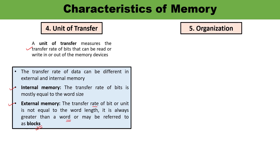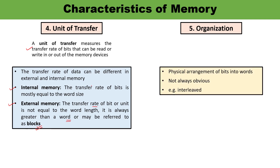Next is organization. Memory organization defines the physical structure of bits used in the memory — it is the physical arrangement, and it is not always obvious. An example is interleaving. This is how you can define the characteristic of organization.